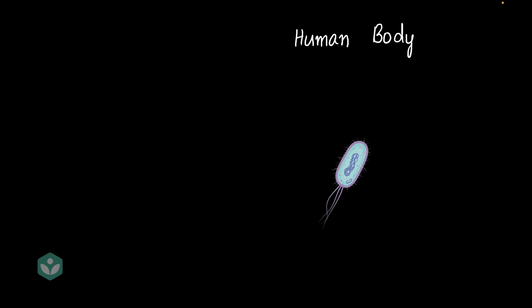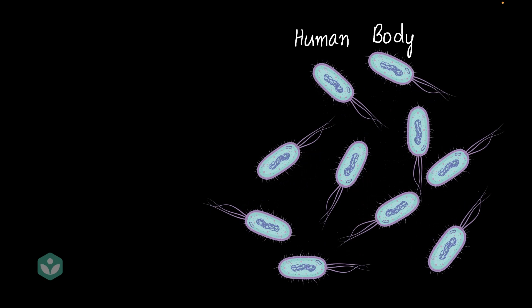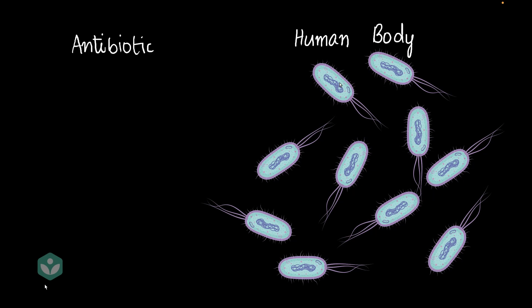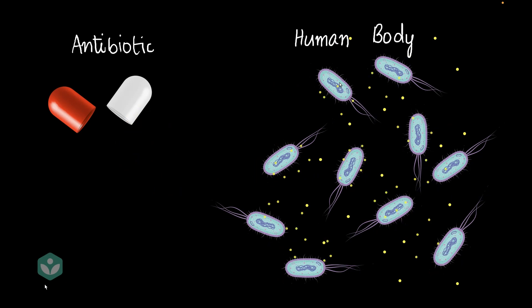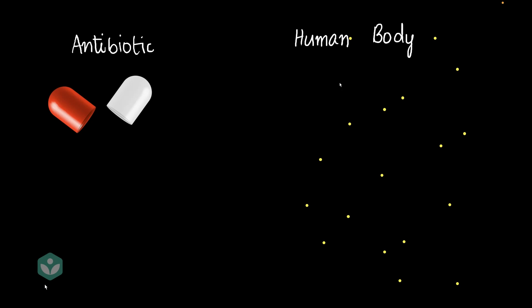Let's see how antibiotics work. Let's say this is the human body and some kind of bacteria has entered it. The moment it enters, it would start multiplying, making the person feel ill. If their immune system was able to destroy the bacteria, they would be fine. But if not, they would need an antibiotic. When an antibiotic is administered, the chemicals go and begin to attack the cell wall of the bacteria, causing it to die. Once the bacteria is dead, the human body is cleared of the infection and the person can live normally again.